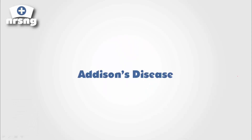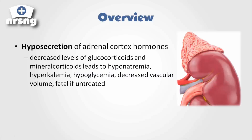Addison's disease and Cushing's disease are very interesting disease processes. When we talk about Addison's and Cushing's, what we're talking about is disorders of the adrenal glands.